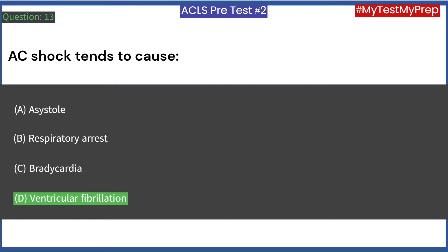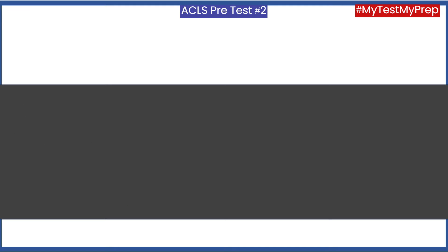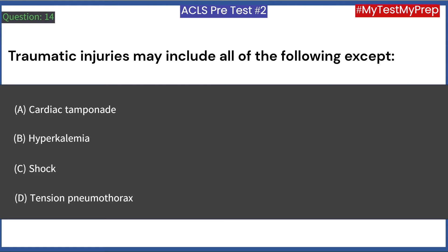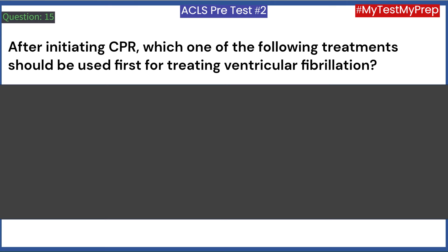Traumatic injuries may include all of the following except: A. Cardiac tamponade. B. Hyperkalemia. C. Shock. D. Tension pneumothorax. Answer: B. Hyperkalemia.